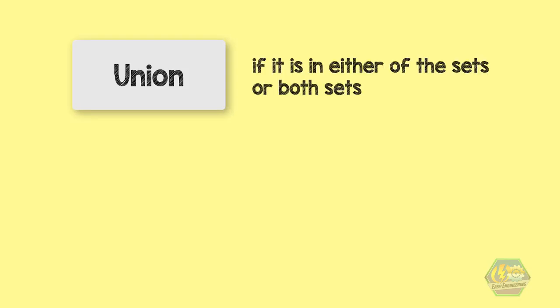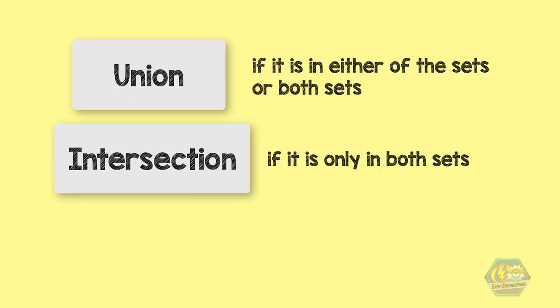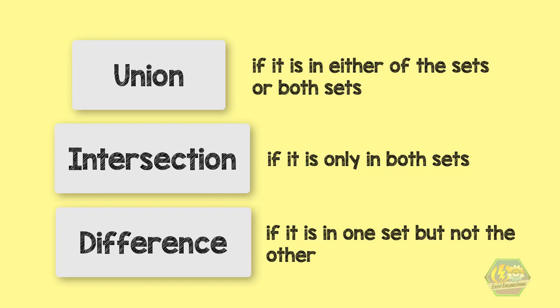So far in this lesson, we have learned the operations in two sets. To recap, we use union if it is in either of the sets or both sets. We use intersection if it is only in both sets. And we use the difference if it is in one set but not the other.